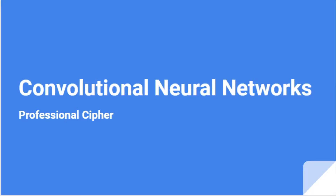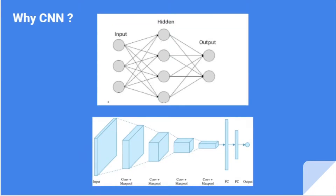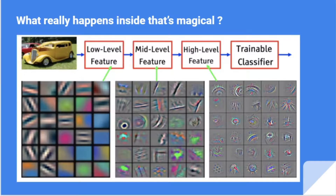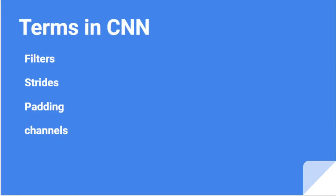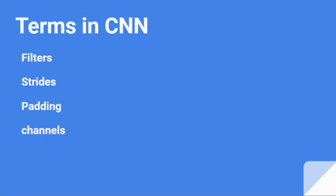Hello everyone, welcome to Professional Cipher. This is the second video on convolutional neural networks. A quick recap on our last video, which was an introduction to CNN. We discussed the structure of CNN, what happens inside a CNN for an image, and how it transforms. We also learned about one layer of a CNN and what mathematical operation is actually happening inside. Today we are going to delve deep into CNN, going into the terms in CNN, because only after knowing the terms will we be able to understand the operations happening inside.